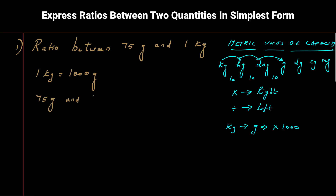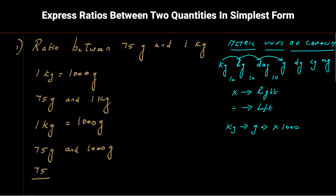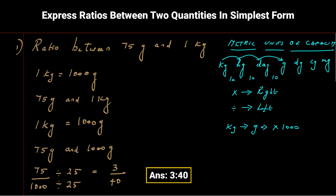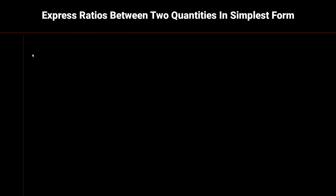We have 75 grams and 1 kilogram. Converting: 1 kilogram = 1000 grams, so now both are in grams: 75 grams and 1000 grams. To express in simplest form, divide 75 by 1000. The common factor is 25: 25 × 3 = 75 and 25 × 40 = 1000. So the ratio in simplest form is 3 : 40.